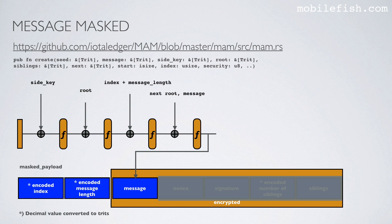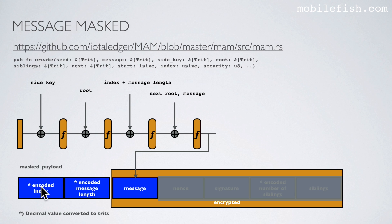I will now explain how the mask payload is created. Please note this is a simplified explanation. In the create function the mask payload is created. The create function needs the seed, the message, the side key, the root, the siblings, the next root, the start value, the index value, and the security level. The index value is converted to trites and stored in this field. The message length is calculated and converted to trites and stored in this field.